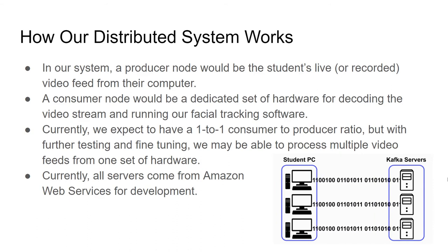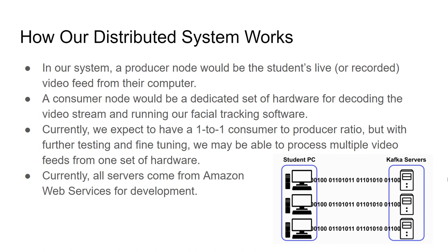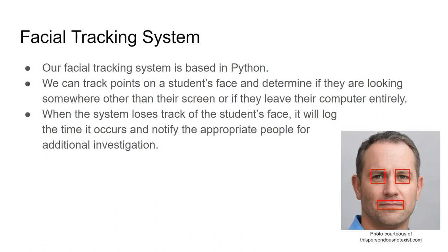Currently we expect to have a one-to-one consumer to producer ratio, meaning one consumer for every one producer. But with further setting and fine-tuning of our facial recognition software, we may be able to process multiple video feeds from one piece of hardware. We utilize Amazon Web Services for development by deploying an Ubuntu system to test our Apache Kafka system on. Our facial tracking system was written in Python, and with our Python code we can track points on a student's face and determine if they are looking somewhere other than their screen or if they leave their computer entirely. When the program loses track of the student's face, it will log the time that the incident occurred and notify the appropriate people for additional investigation to determine if an act of academic misconduct has occurred.